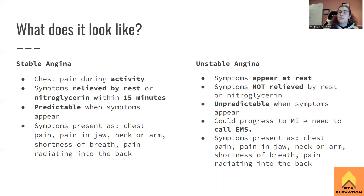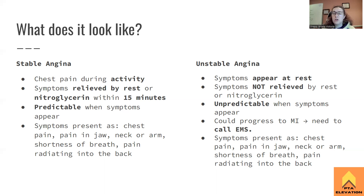Stable angina is predictable. The patient knows — for example, if they walk up four flights of stairs, by the third flight they're getting chest pain, or if they walk faster than three miles per hour, symptoms appear. It's very predictable when stable angina will show up. With trial and error, we can identify which activities trigger symptoms — maybe it shows up with running but not walking — and we know what's going on.